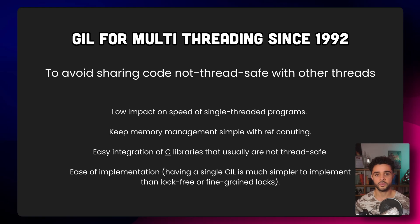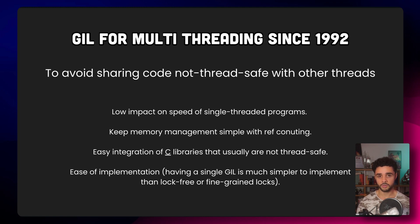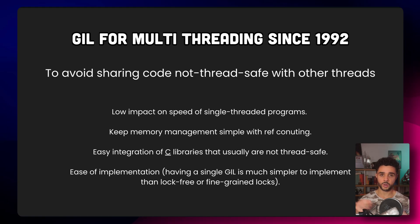The GIL has a few advantages. First of all, it has a low impact on a single-threaded program, as you only have to acquire one lock to be able to execute instructions with the interpreter. It also helped Python keep a simple memory management system called reference counting, as the implementation was not thread-safe at the time. Finally, it also let Python leverage C libraries that are not thread-safe, and it's simple to implement because you just have a single lock, compared to implementing fine-grained locking to let multiple threads make progress at the same time.